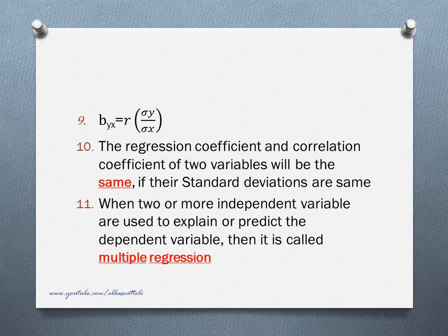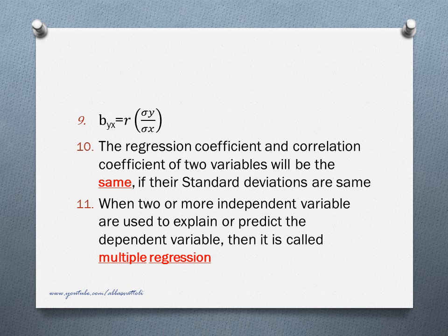b_yx is equal to R times sigma Y divided by sigma X. The regression coefficient and correlation coefficient of two variables will be the same if their standard deviations are equal. If you look at the equation b_yx equals R times sigma Y by sigma X, if standard deviations of X and Y are the same, they cancel to 1, so b_yx equals R. When two or more independent variables are used to explain or predict the dependent variable, it is called multiple regression. When one independent variable is used, it is called simple regression or linear regression.